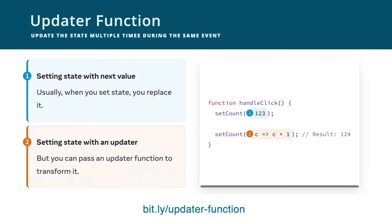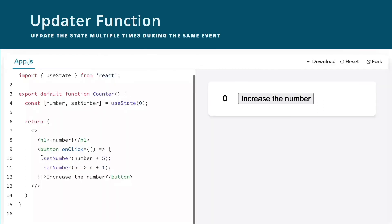If you want to update the state multiple times during the same event, you can use the updater function. An updater function might sound complicated, but a diagram from the new docs shows how to create one, as well as the difference between setting state with a value and setting state with an updater function. The updater function is added to the queue, which means that when React updates the state, it gets the new value and then runs through the function using the new updated value.